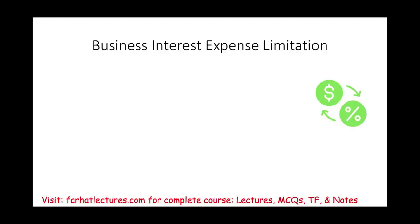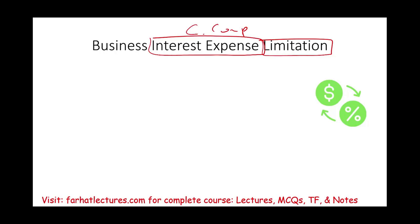Hello and welcome to this session in which we will discuss the business interest expense limitation. The big idea of this limitation is to limit the deduction of interest expense for C corporations. This limitation applies only to C corporations. The purpose is to curb the deduction of interest expense. Interest expense is a form of financing — you borrow money, you pay interest on it — and interest expense is tax deductible.